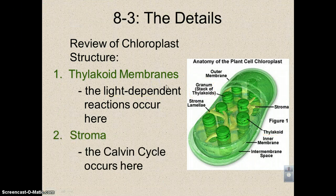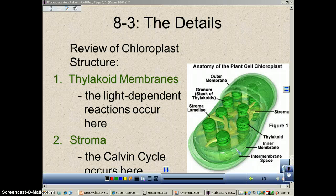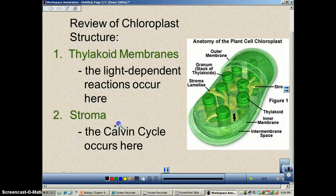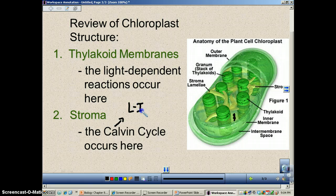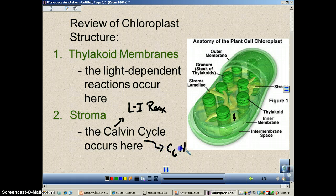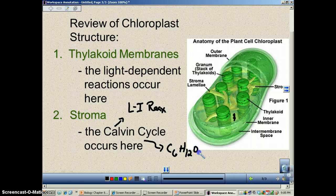The next part is that stroma — remember, the stroma is this dead space right in here. This is where the Calvin cycle occurs. The Calvin cycle is sometimes referred to as the light-independent reaction. The ATP and NADPH produced in the thylakoid will be delivered out into the stroma, where the Calvin cycle will make your glucose, C6H12O6.